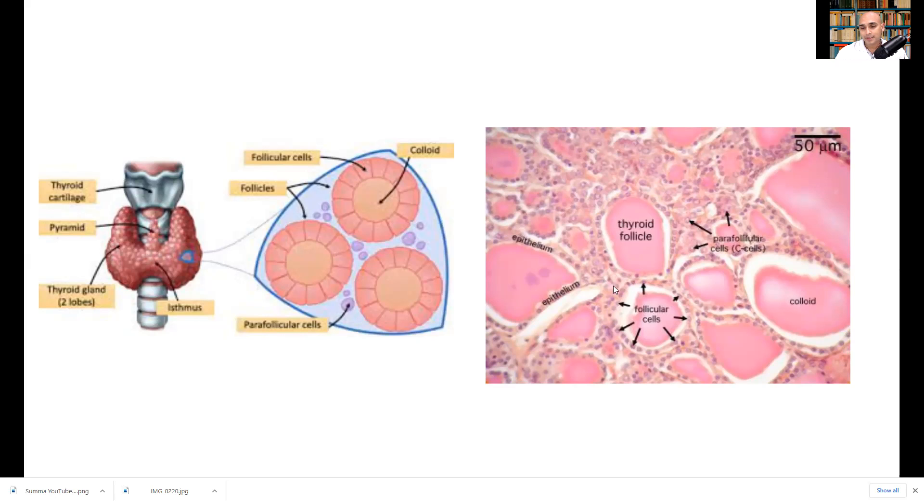So what happens is iodine is actually absorbed through the bloodstream, and it enters into these follicular cells, and then it is transported into the thyroid follicle and helps to produce T3 and T4 when it binds with something called thyroglobulin.